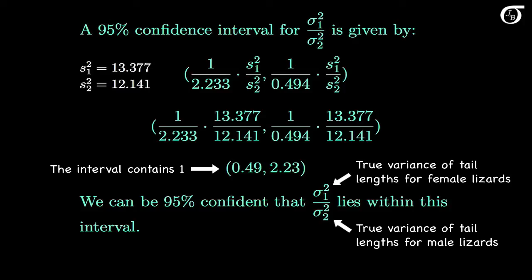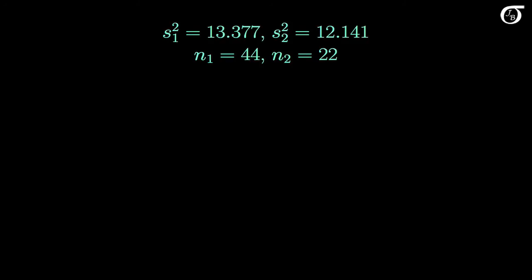But if we are interested in investigating whether there is a difference in variances, we can also carry out a formal hypothesis test. We have a pretty good idea of what the results will be based on this interval, but let's go ahead and carry out the test. Here are the sample variances and sample sizes, and let's test the null hypothesis that the population variances are equal against the two-sided alternative that they are different. A two-sided alternative hypothesis is appropriate here, as we're interested in a difference in either direction.